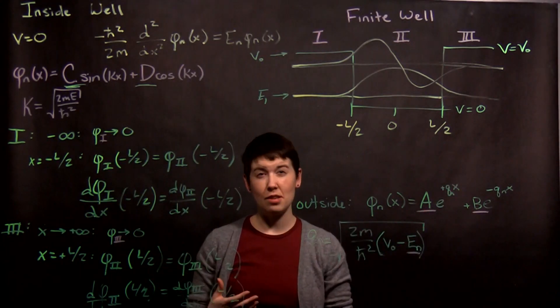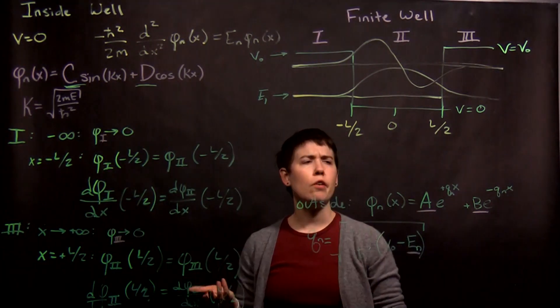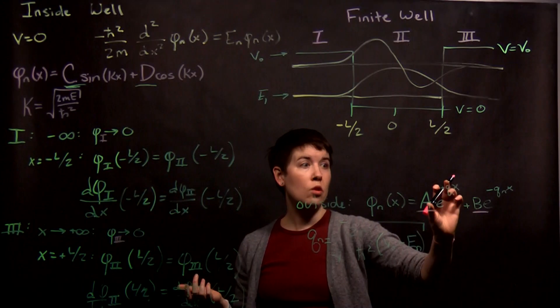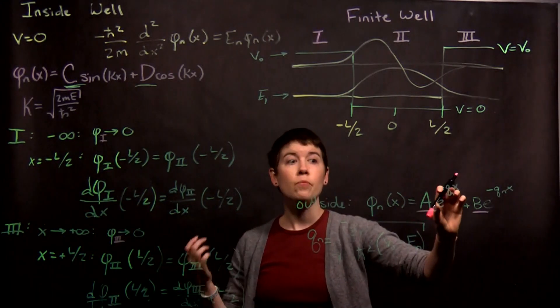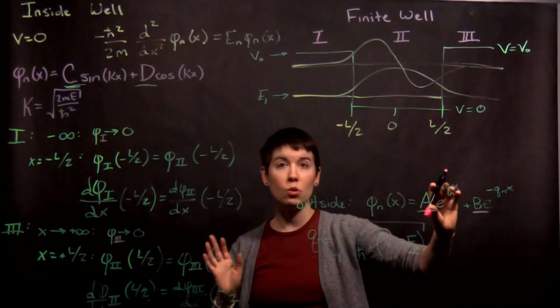This basically becomes e to the negative infinity. Ah, well, that's just zero. So, this works. This term goes to zero as x goes to negative infinity. Nice. This behaves the way we need it to.